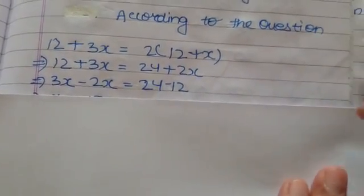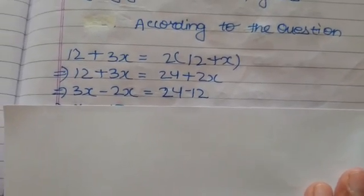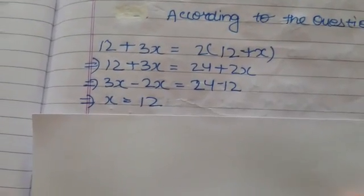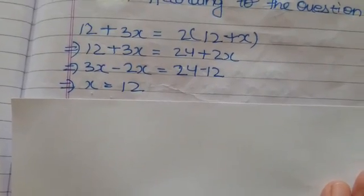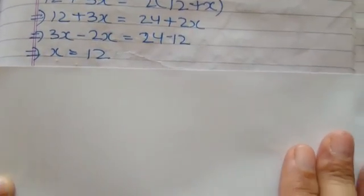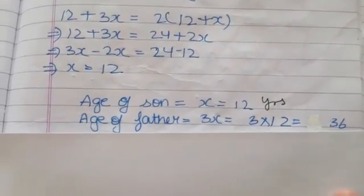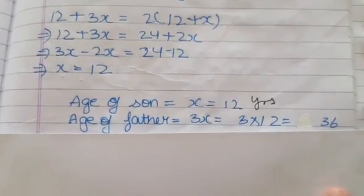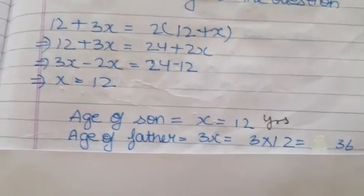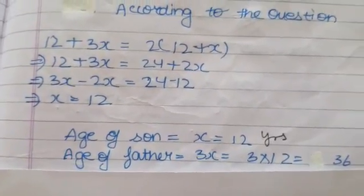This implies 3X minus 2X equals 24 minus 12. X equals 12. So, this X is indicating what? Age of son. Age of son is equal to 12 years. And the age of father will be 3X. That is 3 times 12, which is equal to 36 years. Very good.